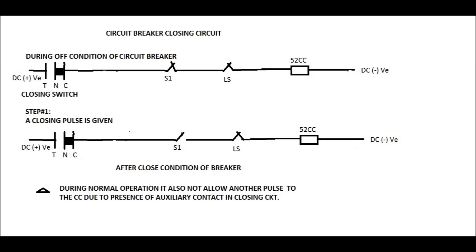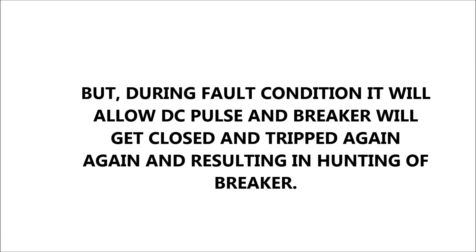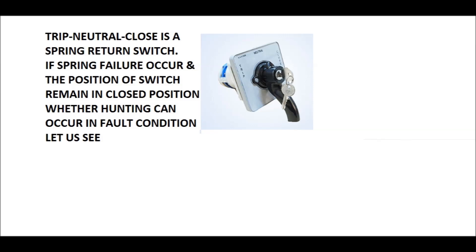In the presence of the auxiliary contact, it will not allow another DC pulse to the closing coil. But in fault conditions, as soon as the breaker trips, it will allow the DC pulse to the closing coil again, which will operate the breaker to make it ON. Since the fault is still present, it will trip again — a situation arises where it will close-trip-close-trip, that is, hunting of the breaker, thereby causing failure of the breaker.